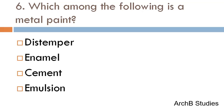Which among the following is a metal paint — distemper, enamel, cement, or emulsion? The correct answer is enamel.